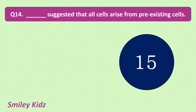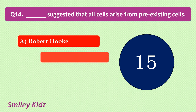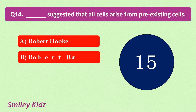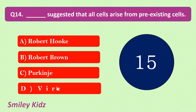Question number 14. Dash suggested that all cells arise from preexisting cells. Your options are: Robert Hooke, Robert Brown, Purkinje, Virchow. Your time starts now.